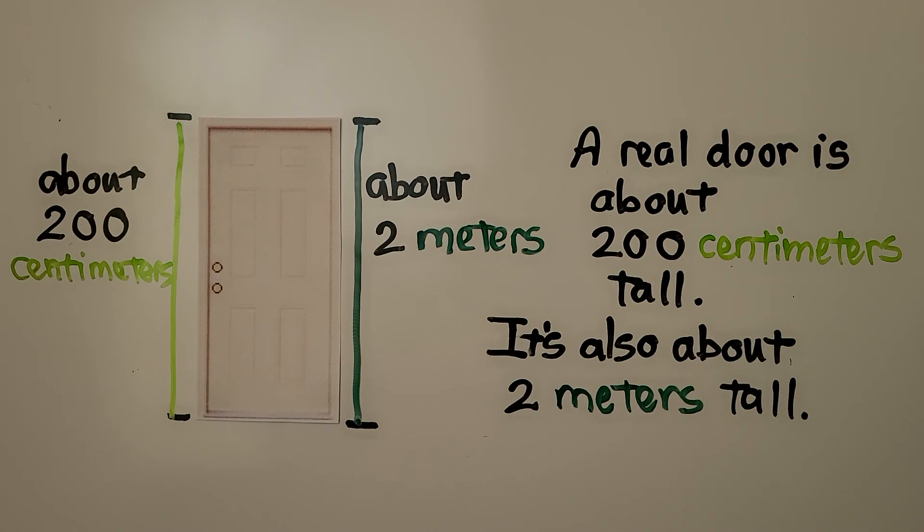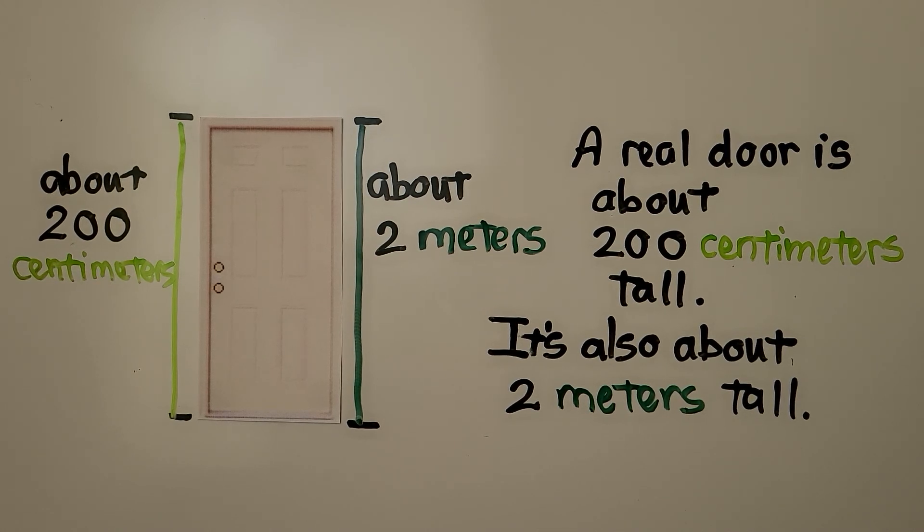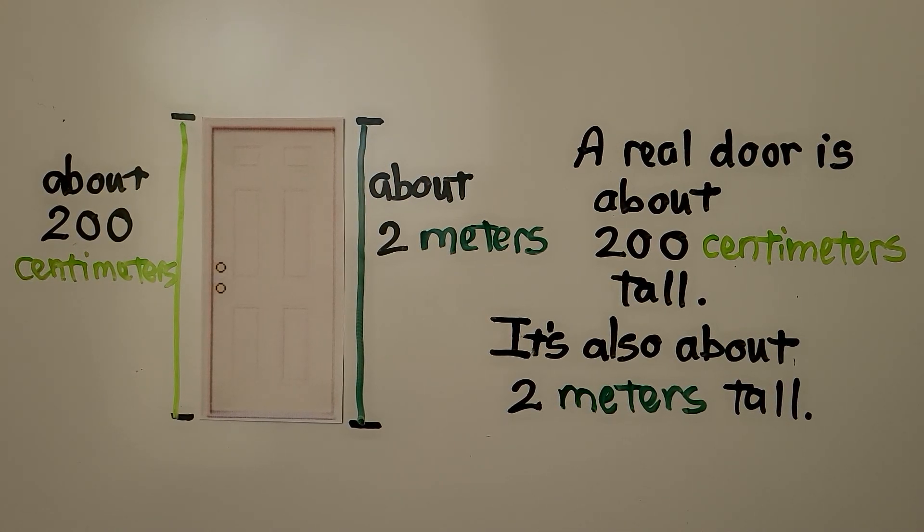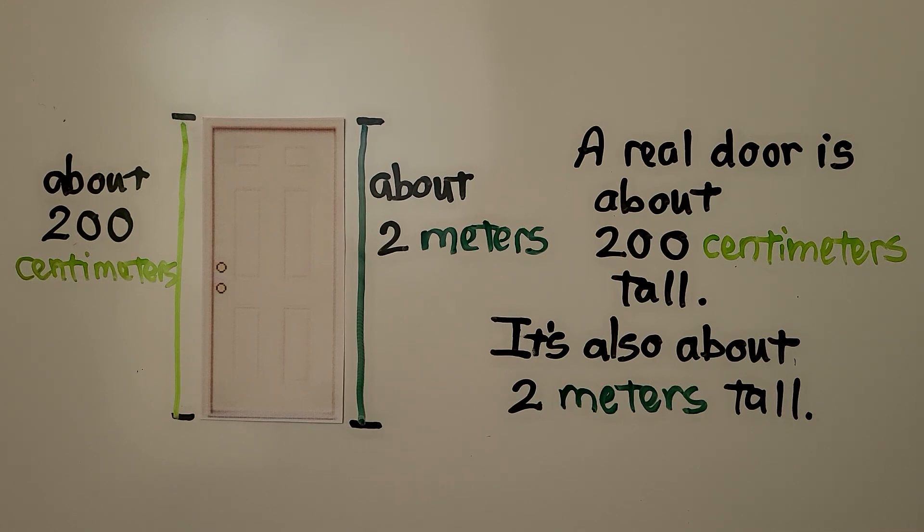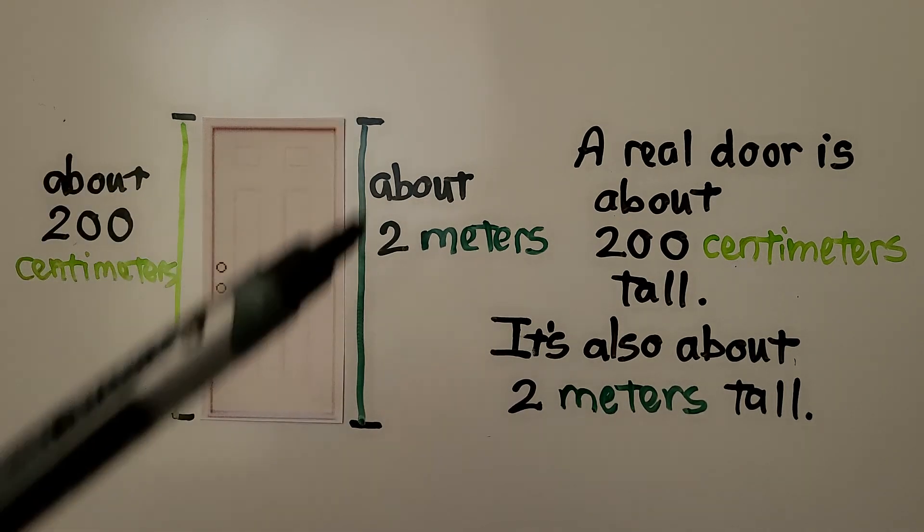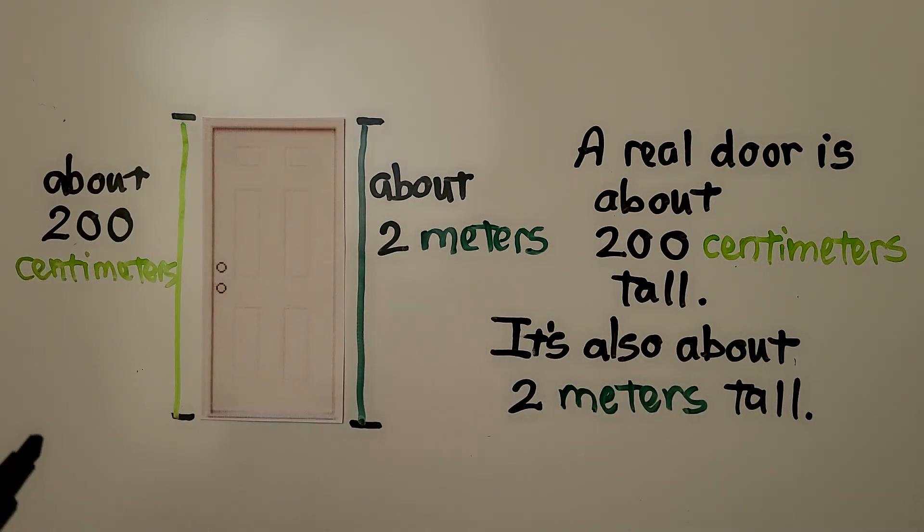A real door is about 200 centimeters tall. It's also about two meters tall. This would be 200 centimeters and it would be about two meters. There's 100 centimeters in a meter, so 200 centimeters would be two meters.